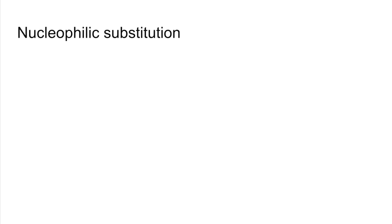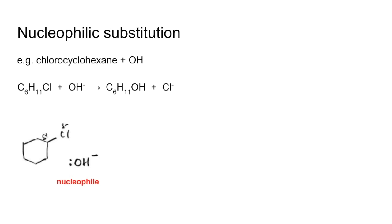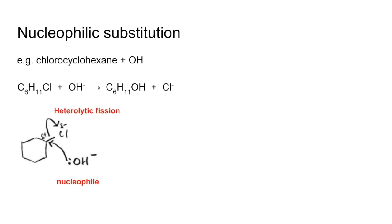Next is nucleophilic substitution, using chlorocyclohexane with the hydroxide ion — for example, reacting with sodium hydroxide. The carbon-chlorine bond has a dipole across it due to the higher electronegativity of chlorine. The hydroxide ion acts as a nucleophile — an electron pair donor — donating its pair of electrons on the oxygen to the slightly positive carbon. That repels the pair of electrons in the C-Cl bond completely onto the chlorine, breaking the bond by heterolytic fission, giving the products.